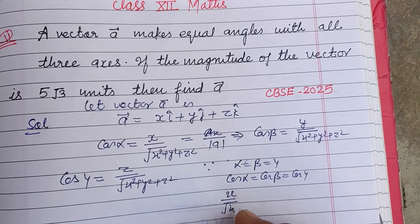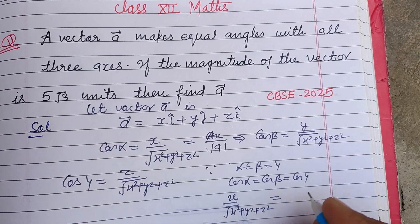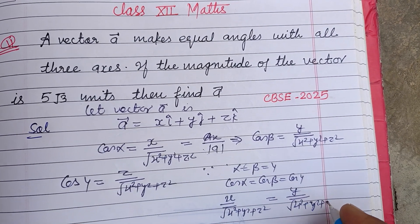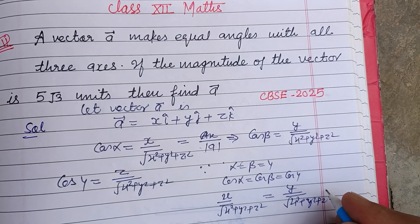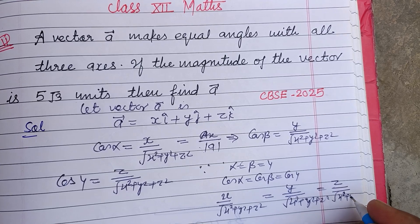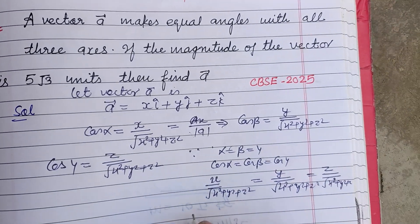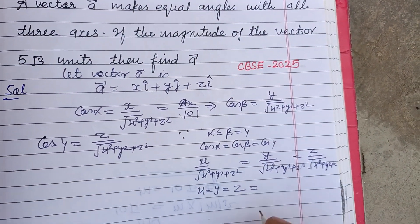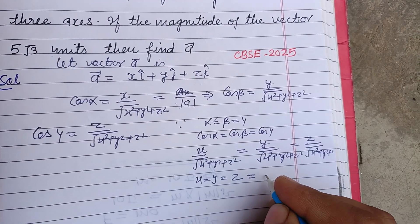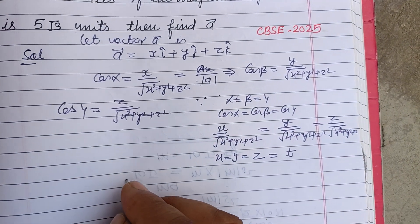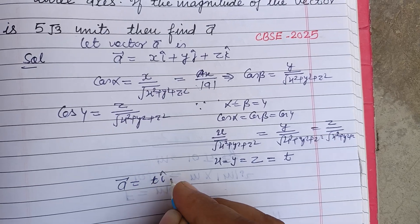So x over root of (x squared plus y squared plus z squared) equals y over root of (x squared plus y squared plus z squared) equals z over root of (x squared plus y squared plus z squared). Then x equals y equals z. Let this equal t.